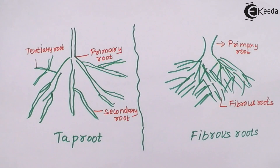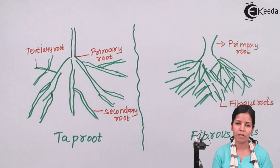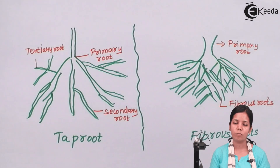Students, in this part of the chapter we have studied about two kinds of roots: tap roots and adventitious roots. I hope you all are clear about this concept. Thank you.